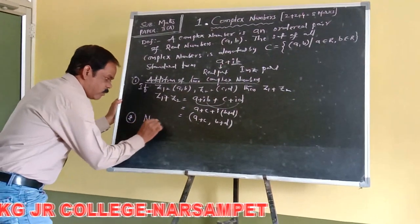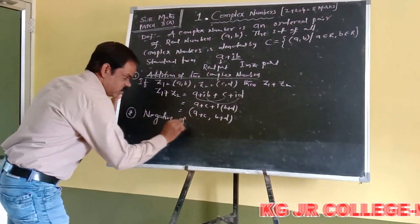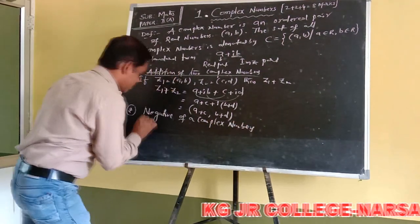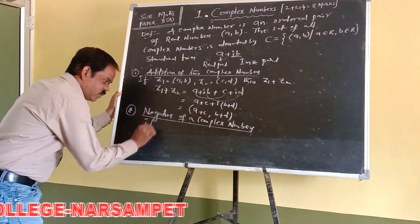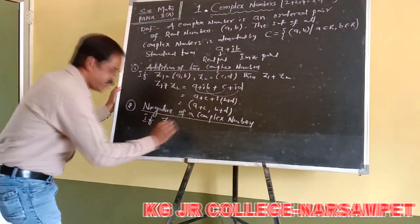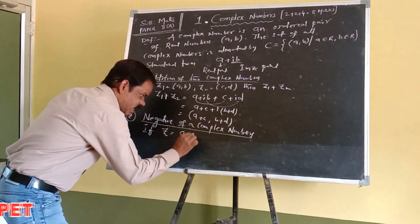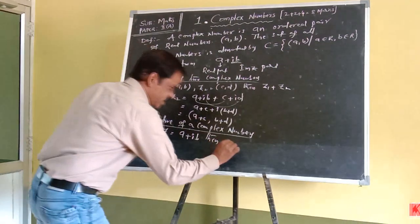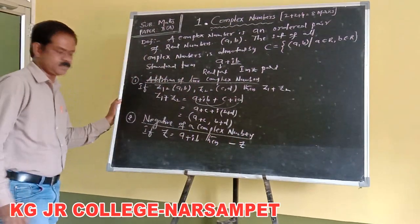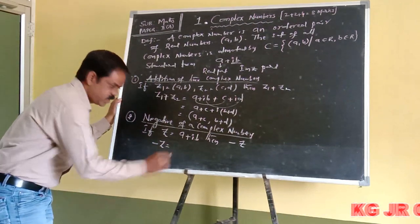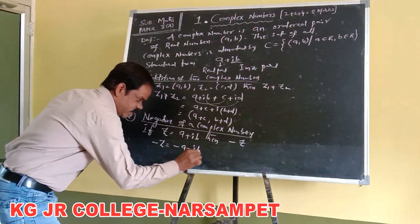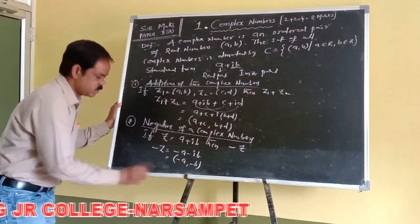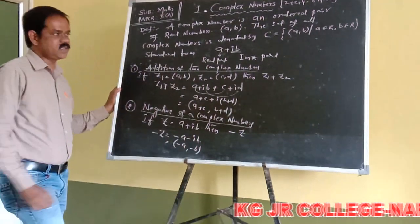Next: negative of a complex number. If Z is equal to a + ib is the complex number, then the negative of a complex number is denoted by minus Z. So minus Z is equal to −a − ib. Its ordered pair form is (−a, −b). This is called the negative of a complex number.